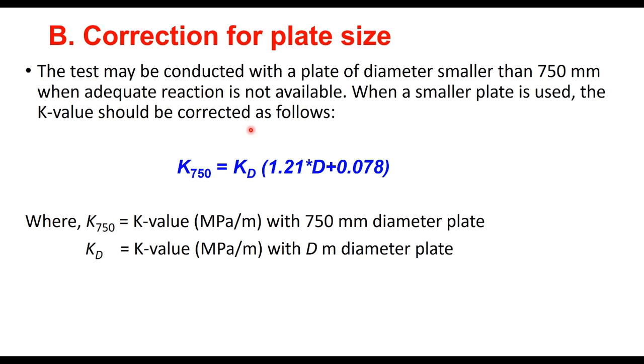In that case, the k value should be corrected using this equation, where k_750 is the k value corresponding to 750 millimeter diameter plate and k_d is the k value we determine corresponding to d meter diameter of the plate. Remember here d is in meters.